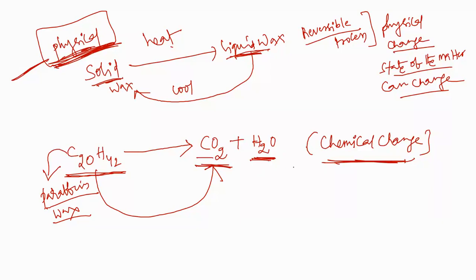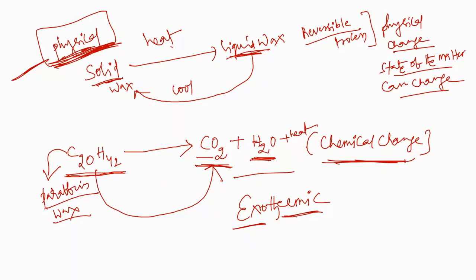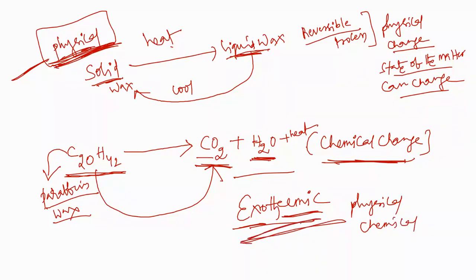When you light or burn the candle, heat energy also liberates outside. That is why burning of a candle is a good example for exothermic change. 'Exo' means outside, 'thermic' means heat energy — so heat energy is liberated outside when a candle burns. Therefore, burning of a candle is a good example for physical change, chemical change, and finally exothermic change also. I hope you got my point. Thank you, my dear children.